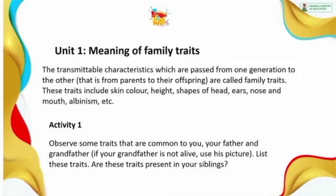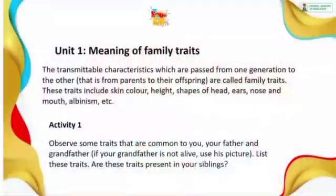Albinism is also a family trait. If your parents, grandparents, or relatives are albinos, you can inherit the transmittable characteristic of being an albino. I would like to give you an activity: observe some transmittable characteristics common to you, your father, and your grandfather. If your father is not alive, use his picture. For example, my dad and I have the same shape of nose — that characteristic was transmitted from my grandpa.